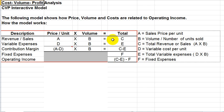So A times B equals C, and C is the total revenue or sales for that row. Now we look at variable expenses in the same way. The variable expense per unit is represented by D times the same number of units that were sold.